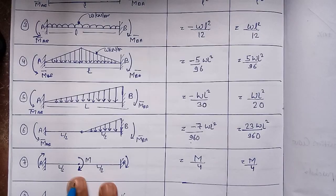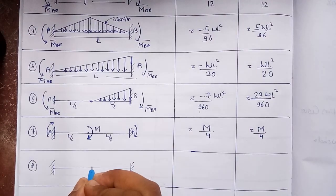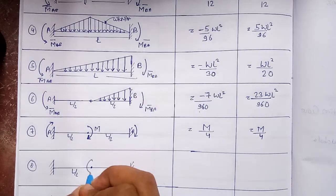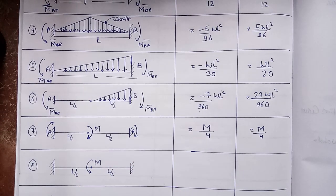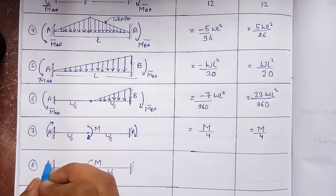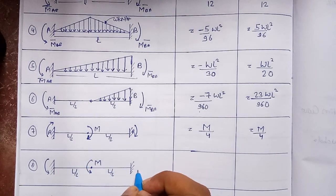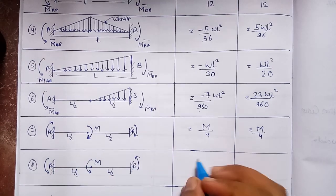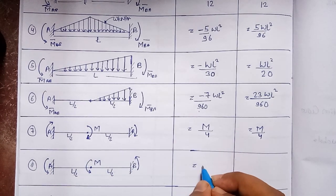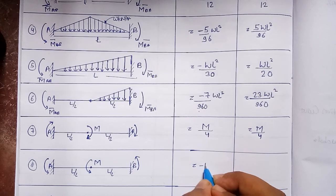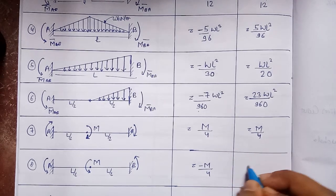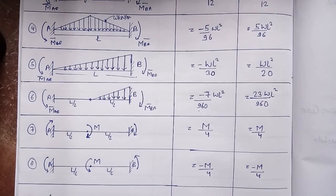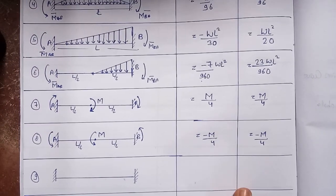The eighth case is when an anti-clockwise moment M is applied at the center of the fixed beam (at L/2 from each end). The beam tries to rotate anti-clockwise as a whole, so the moments at both ends are anti-clockwise (negative). The fixed end moments are: M-bar_AB = −M/4 and M-bar_BA = −M/4.